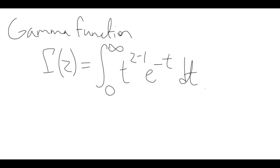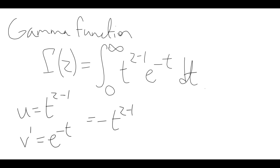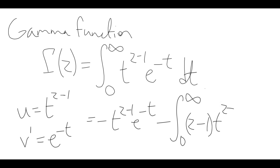You may wonder where this comes from, and one answer is it's just Euler coming up with things. But if we do integration by parts on this with u being t to the z minus 1 and v prime being e to the minus t, what we end up with is minus t to the z minus 1, e to the minus t, minus the integral from 0 to infinity. The derivative of u is z minus 1 times t to the z minus 2, and v is minus e to the minus t.